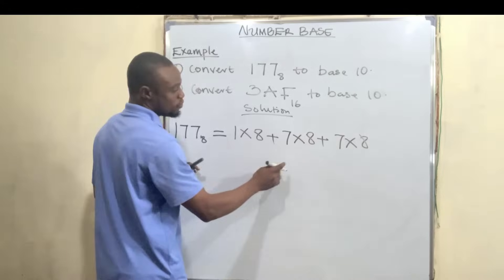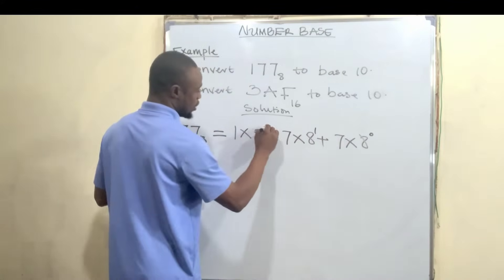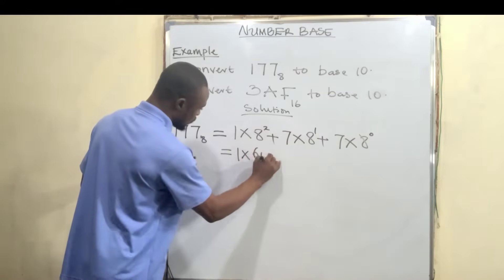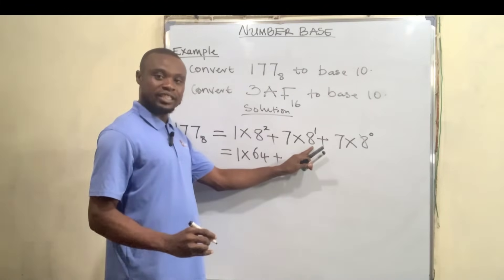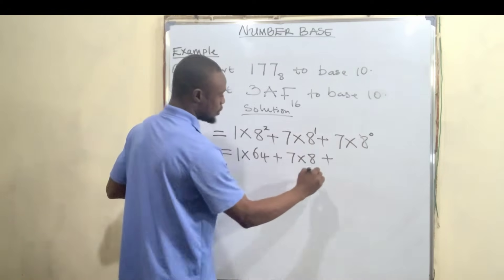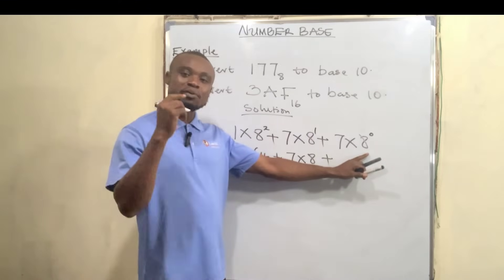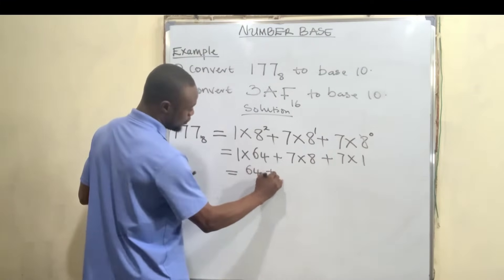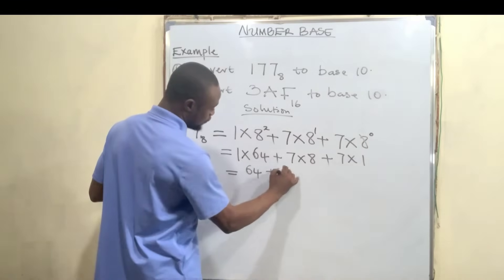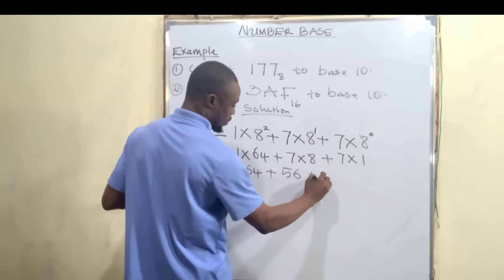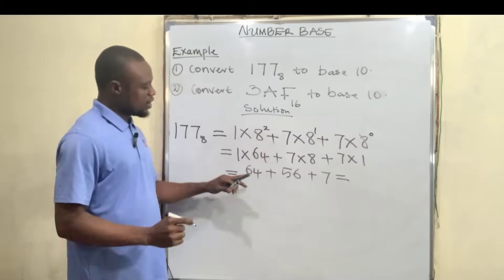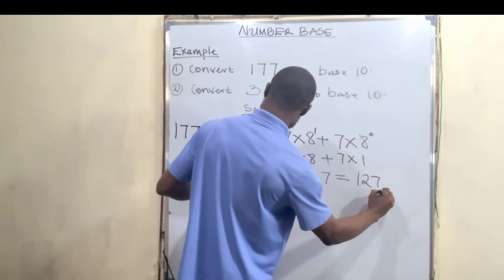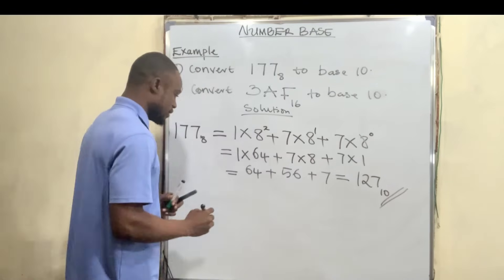The least power here is 0, then 1, then 2. So 8 squared is the same as 8 times 8, which is 64. We have 1 times 64, plus 8 to the power of 1 is 8, so 7 times 8, plus 8 to the power of 0 is 1 — any number raised to the power of 0 is 1 — so we have 7 times 1. That gives us: 1 times 64 is 64, plus 7 times 8 is 56, plus 7 times 1 is 7. So 64 plus 56 is 120, plus 7 is 127 in base 10.